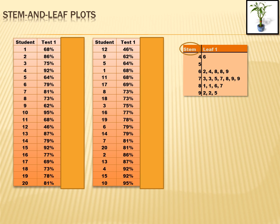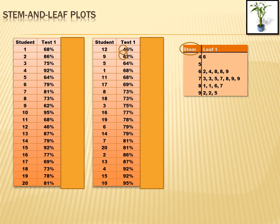Under stem I've got a 4, a 5, a 6, a 7, an 8, and a 9. Where did those numbers come from? They came from the table. That 4 represents scores in the 40s. There's a 5 there but nothing behind it because nobody scored in the 50s. They did score in the 60s, 70s, 80s, and 90s, so I have a 6, 7, 8, and 9. The stems are the first digit — the tens digit — of each score.